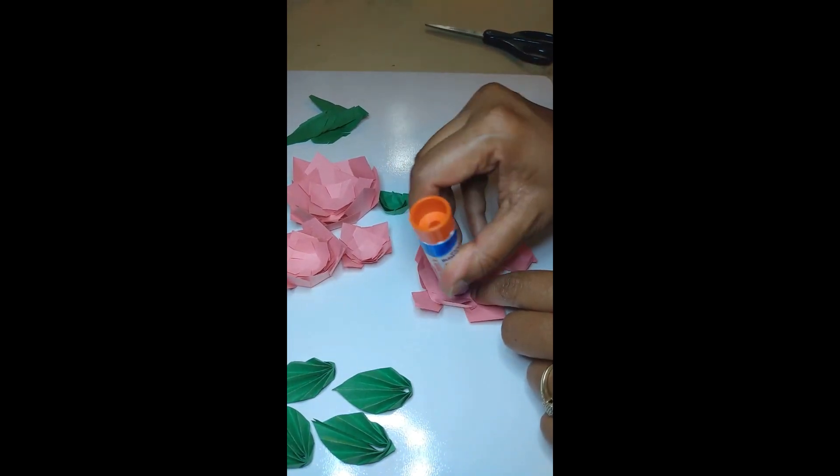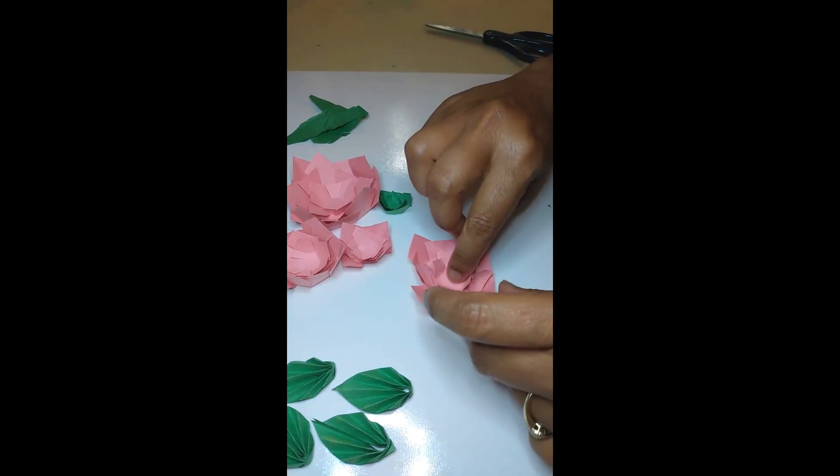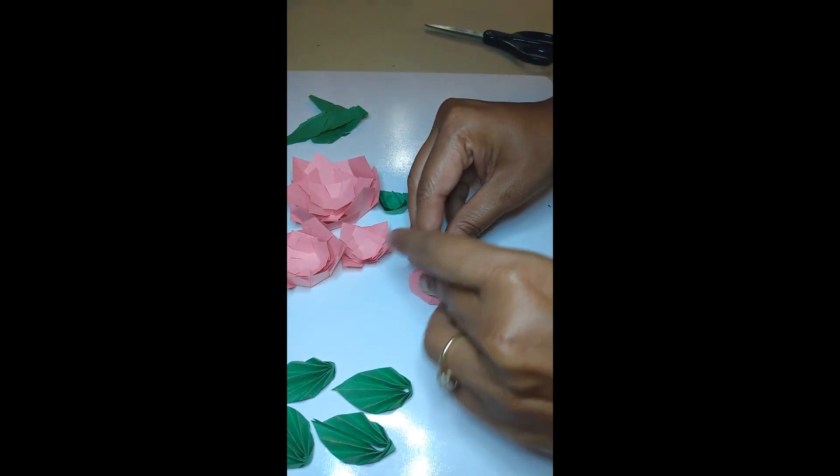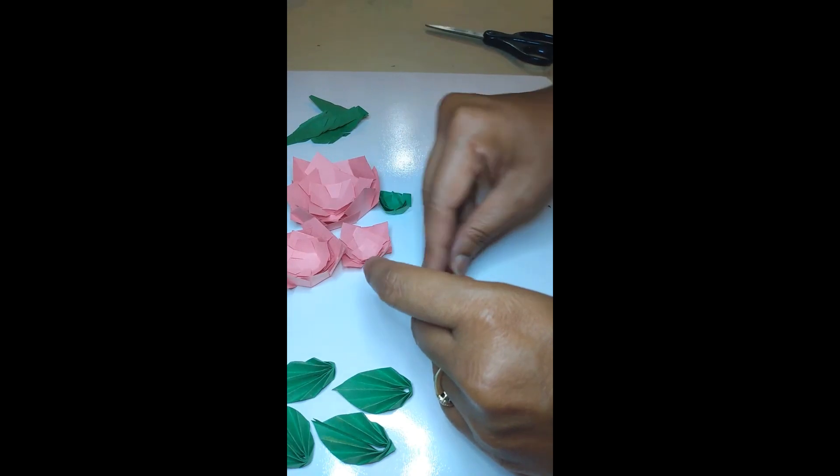After that, add glue to the medium size, then add the smaller size. After sticking together, just fold it. Now it's shaped like a flower.